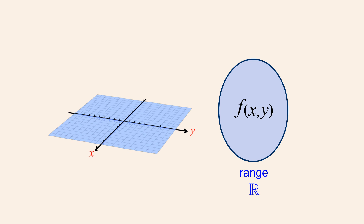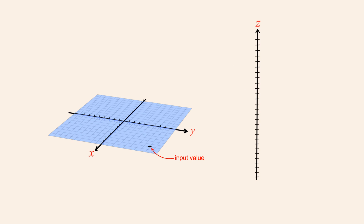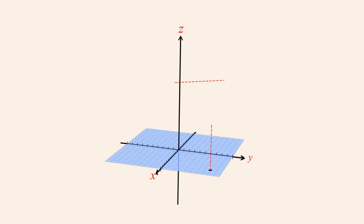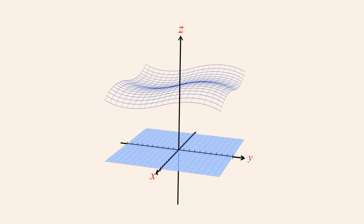The domain R² corresponds to the two-dimensional space represented by the xy-plane, and each domain element corresponds to a specific position on this plane. The range R corresponds to the one-dimensional space represented by the z-axis, and each possible value of the output variable z corresponds to some position on this axis. Together, these two positions locate a point in three-dimensional Cartesian space, and the collection of all the points in a function's graph forms a surface in this space. Just as in two dimensions, this graph visually shows how values of the domain are mapped to values of the range.